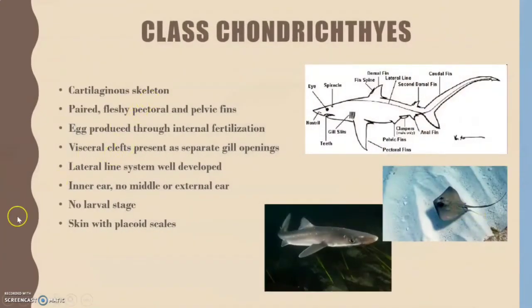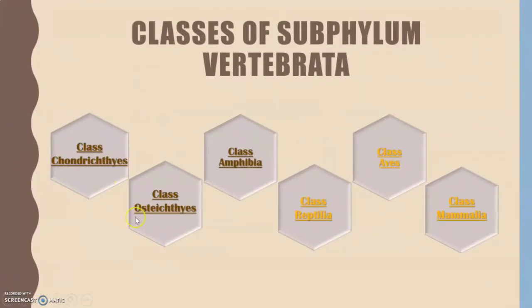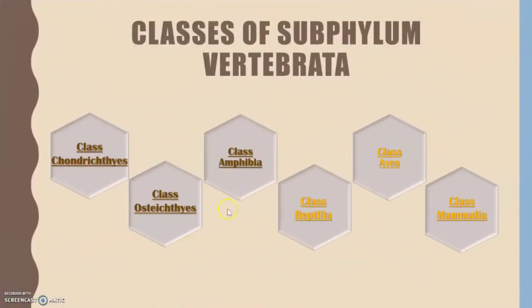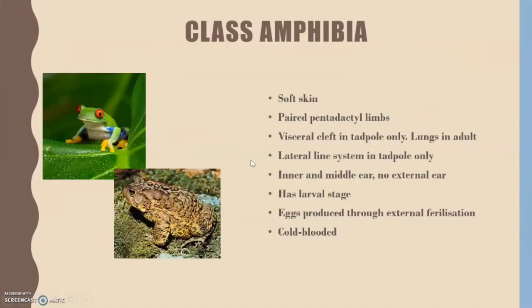For class Chondrichthyes, the characteristics include a cartilaginous skeleton, paired pectoral and pelvic fins, and eggs produced through internal fertilisation. Examples include sharks and stingrays.